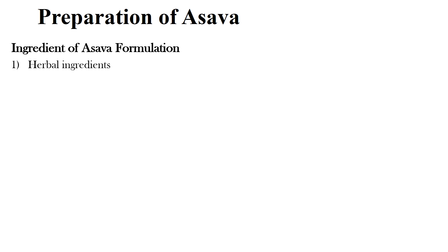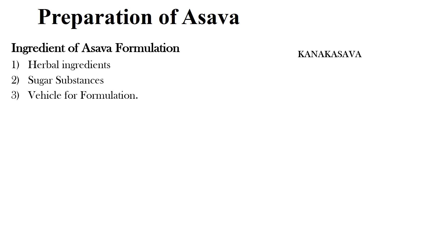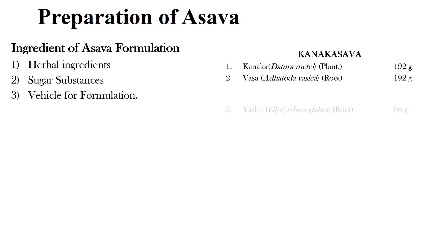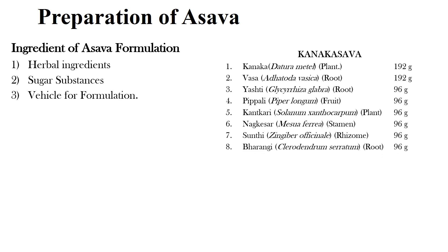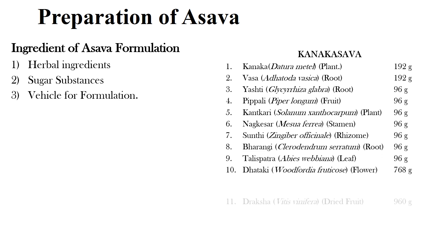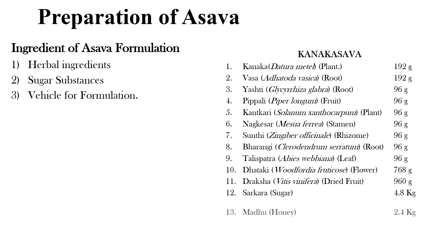Now coming to the preparation of Asava. The ingredients of an Asava formulation can be divided into three parts: herbal ingredients, sugar substances, and vehicle for formulation. This can be visualized with the example of Kanakasava. In the case of Kanakasava, the herbal ingredients include Kanaka (Datura metal), Vasa, Yashti, Pippali, Kantakari, Nagakeshara, Sunthi, Bharangi, Talishapatra, Dhataki, and Drakscha. The sugar substances are Sharkara and Madhu, and the vehicle for formulation is water.